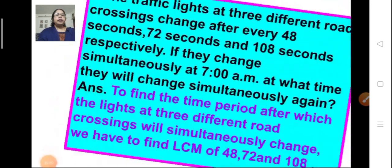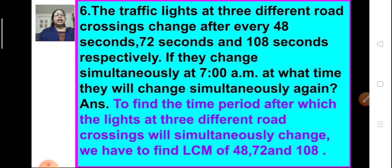Problem number 6: the traffic lights at 3 different road crossings change after every 48 seconds, 72 seconds, and 108 seconds respectively. If they change simultaneously at 7 am, at what time will they change simultaneously again? The first light changes after 48 seconds, the second after 72 seconds, and the third after 108 seconds. They are all changing together at 7 am, and we have to find the next time they change simultaneously.